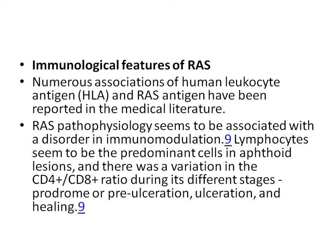Regarding immunological features of recurrent aphthous ulcers: numerous associations of human leukocyte antigen HLA and RAS antigens have been reported in medical literature. RAS pathophysiology seems to be associated with a disorder in immunomodulation. Lymphocytes appear to be the predominant cells in aphthoid lesions, and there is variation in the CD4+ to CD8+ ratio during different stages — prodrome or pre-ulceration, ulceration, and healing. So this is essentially an immunological lesion.